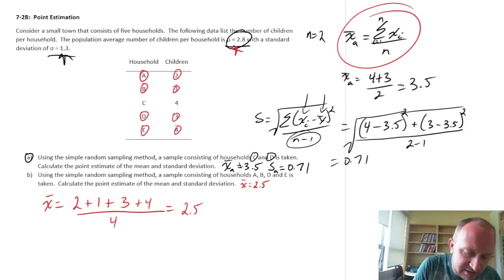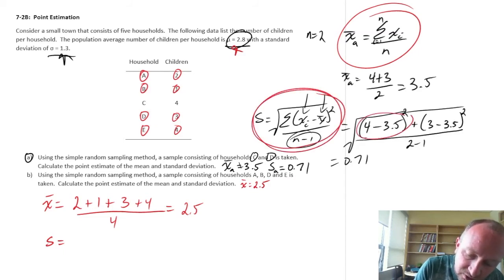For the sample standard deviation now this one will be a little bit longer. We're going to use again the same formula here but now I have to calculate four of these squared differences and add them together, again because I have these four observations.